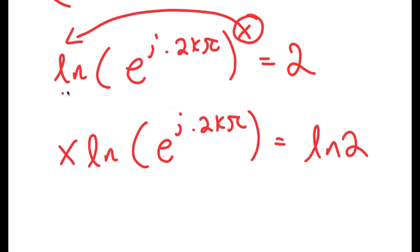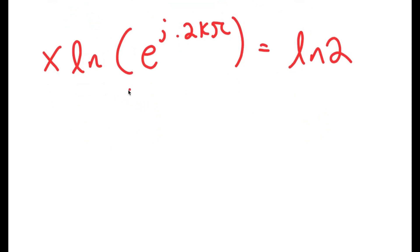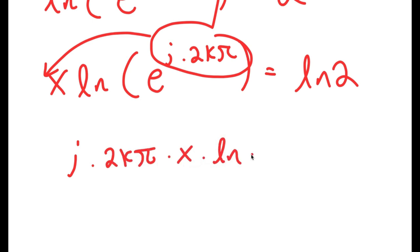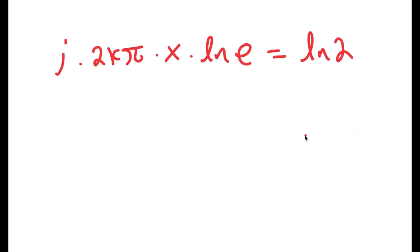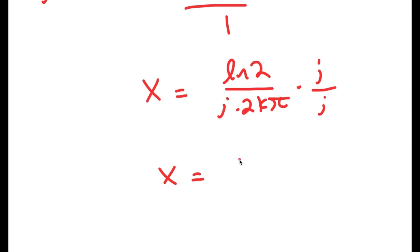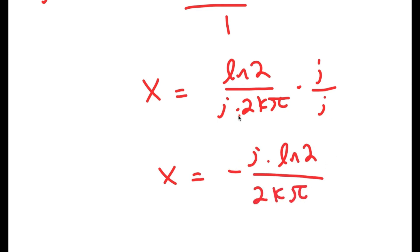I can also move i times 2k pi to the front, so I have i times 2k pi times x times ln e is equal to ln 2. Since ln e equals 1, I get x is equal to ln 2 over i times 2k pi. Multiplying by i over i, and using the fact that i squared equals negative one, I get x is equal to negative i times ln 2 over 2k pi. This is the solution.